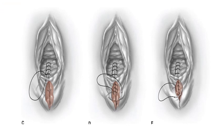Here are the layers repaired during episiotomy. We start one centimeter above the apex of the incision from the vaginal mucosa and suture the vaginal mucosa until we reach the fourchette. After that, we go to the deep perineal muscle, then the superficial perineal muscle, then we close the perineal skin.